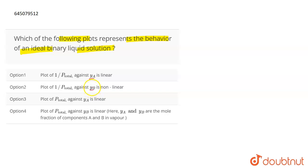Now YA is basically the mole fraction of A in vapor phase. P total is the total pressure. YB is the mole fraction of B in the vapor phase. These are the terms that we are using here.